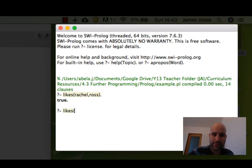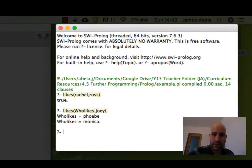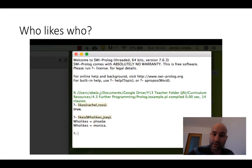Let's try something else. Who likes Joey? Now the capital W means it's a variable. Now once we've done that you must remember after the first answer if you want the other answers you actually need to add a semicolon.